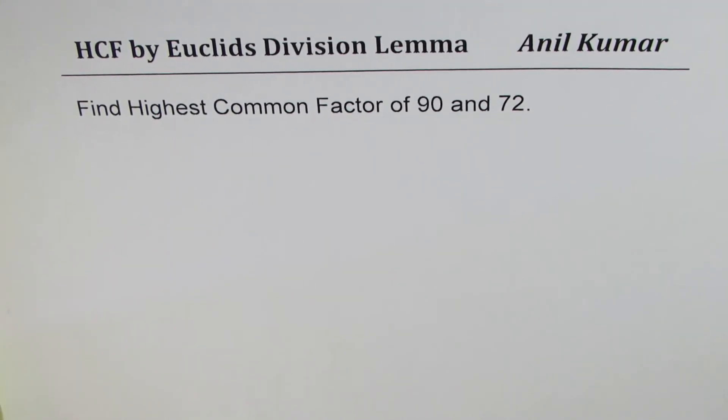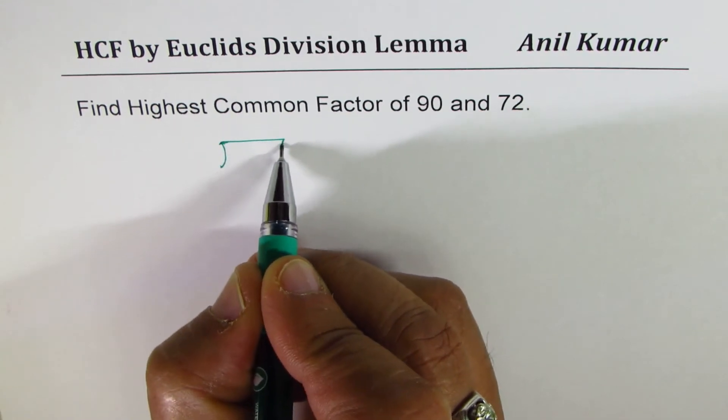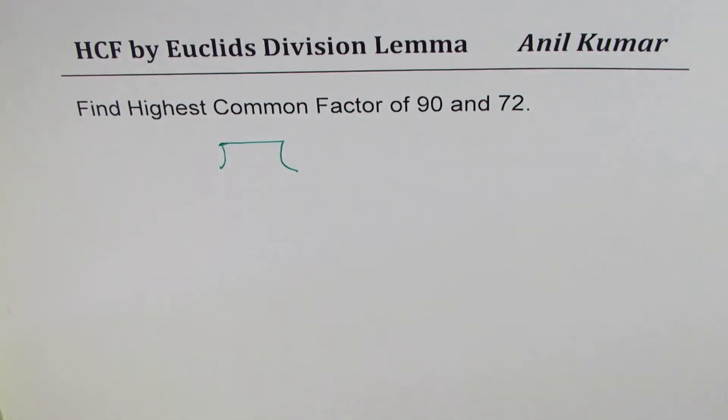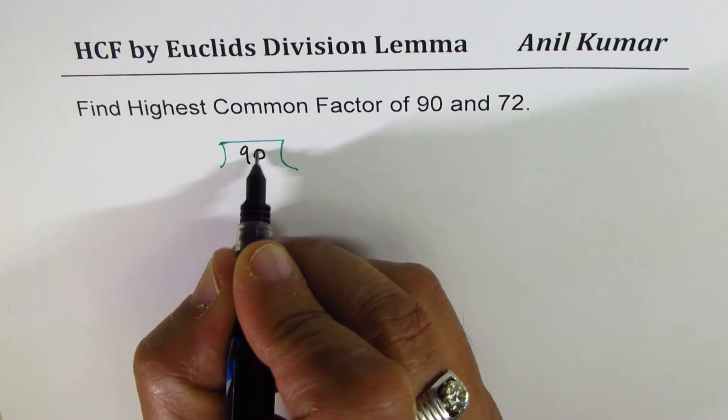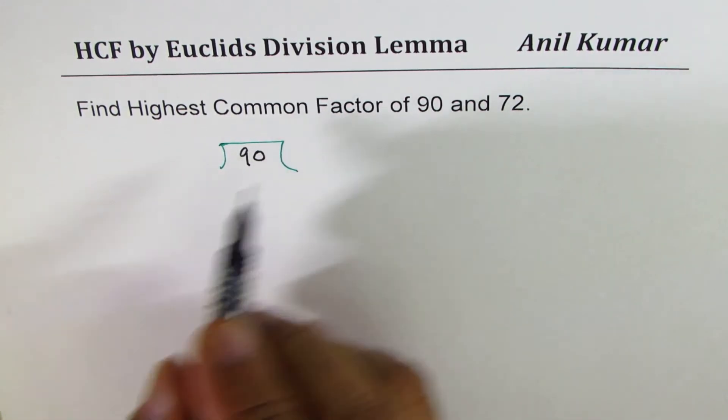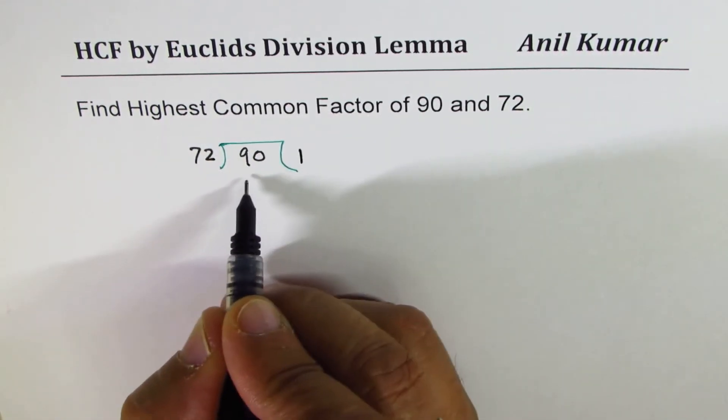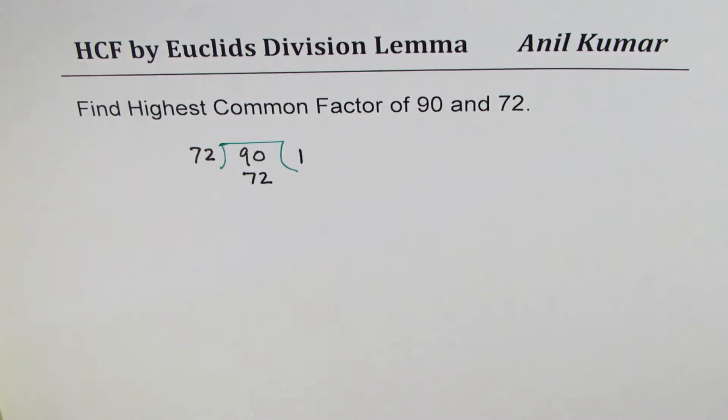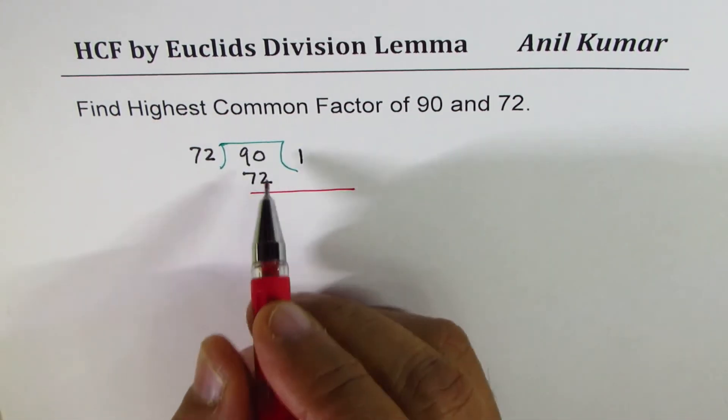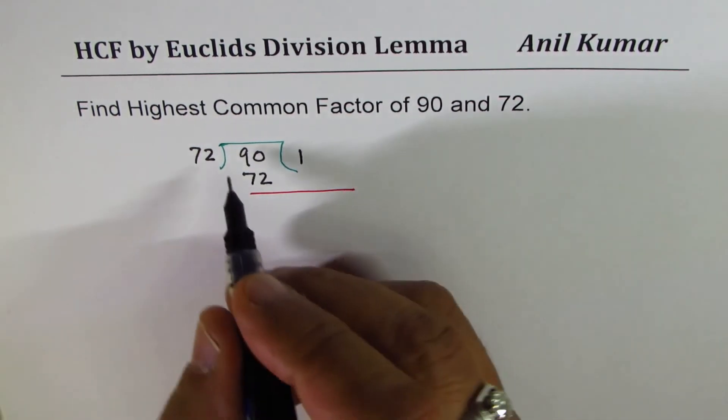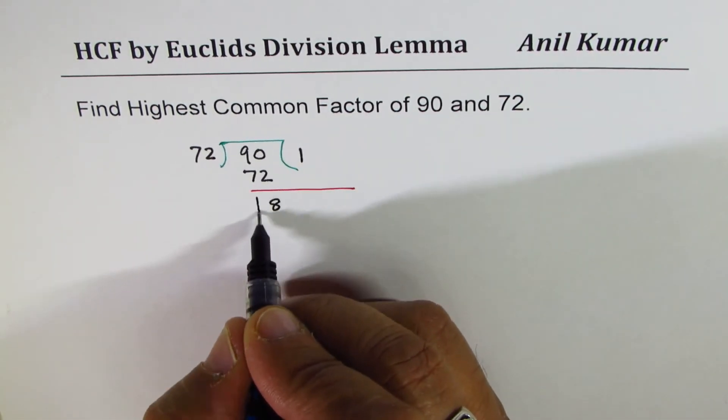This is the last example for you to practice. You can pause the video, try to apply the method, and then check if you get the same solution. We divide this time 90 by 72. We begin by dividing the smaller number into the bigger number. So the divisor is 72. When you divide, 72 times 1 is 72. When you take away, you get 18 as the remainder.